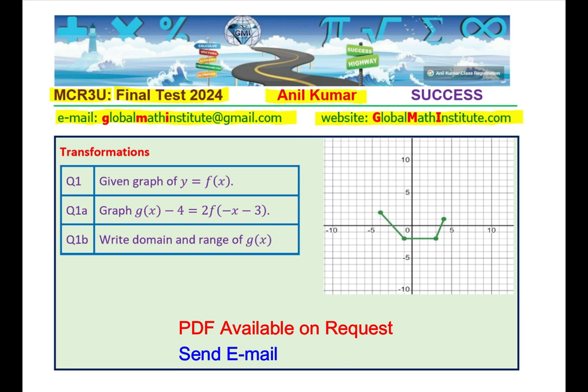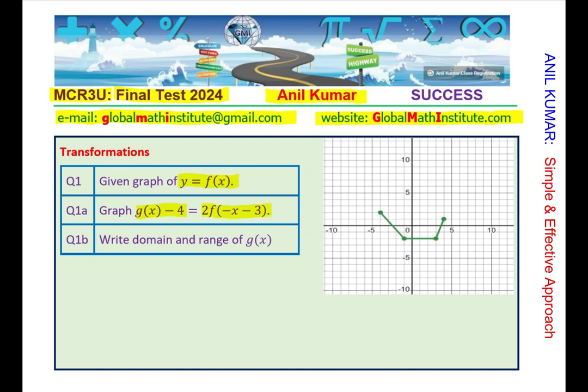Here is the very first question which is based on transformations, functions, and function notation. You are given a graph of y = f(x). Part A is to graph another function g(x) - 4 = 2f(-x - 3). Once you do that, then you need to write down the domain and range of the transformed function g(x).